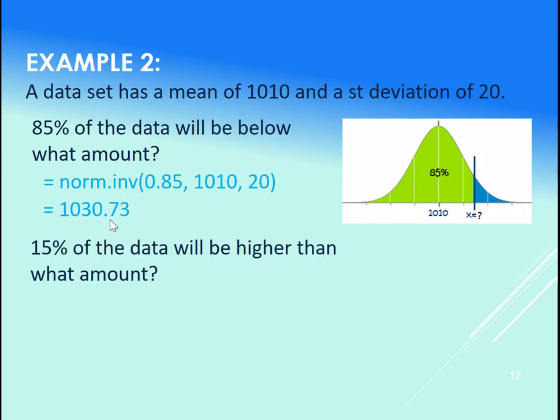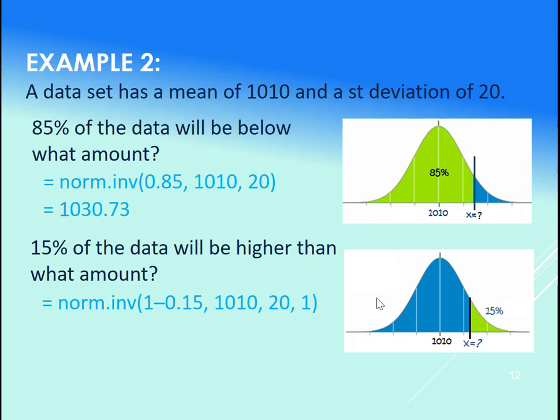And also, let's say we wanted 15% of the data to be higher than what amount. So let's try that guy out too, and then we'll plug both of these into Excel. So we want to know the x value such that 15% of the data is higher than that. What do you notice about these two pictures? We're actually going to get the same x value here. 1 minus this area, this upper area here, this 0.15, actually gives us that 0.85.